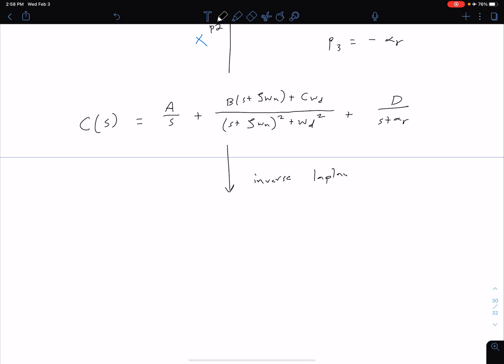If we do the inverse Laplace transform, the general form that we would get is c(t) = A + e^(-ζ·ωn·t)·[B·cos(ωd·t) + C·sin(ωd·t)] + D·e^(-αr·t). An important thing to note is that this last term here is the component based on our real pole, and over here we have the component from our complex poles.